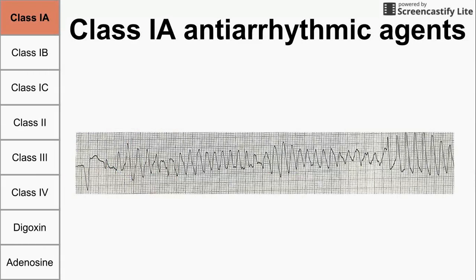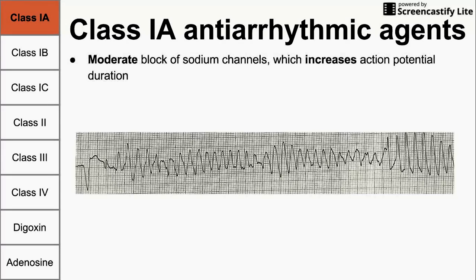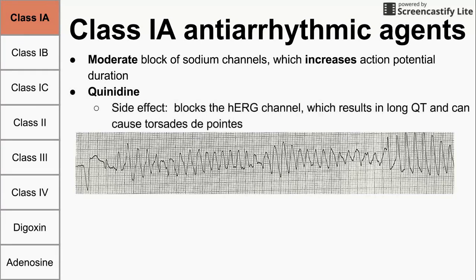We're going to start with class 1A antiarrhythmic agents. These drugs provide a moderate block of sodium channels, which increases the action potential duration. These words are bolded to help differentiate the 1A class from the 1B and 1C class. An example of a class 1A drug is quinidine, which has a side effect of blocking the HERG channel, resulting in long QT syndrome.